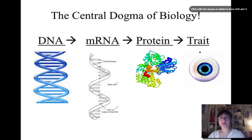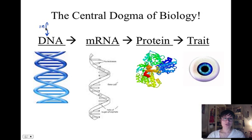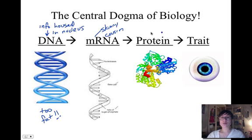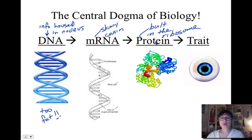Let's go back and revisit the central dogma to make sure we have all the parts. We have our DNA — this is where our original information is housed in the nucleus. Remember DNA can't leave the nucleus because it's too fat. So instead of the DNA being stuck inside, we're going to convert DNA's message into a messenger RNA — the skinny cousin. Once I have my messenger RNA, I'm able to go to the place where I build my proteins, which is the ribosome. Without proteins we won't have any traits, so we need to go from DNA to messenger RNA, messenger RNA to protein, and proteins to our actual traits.